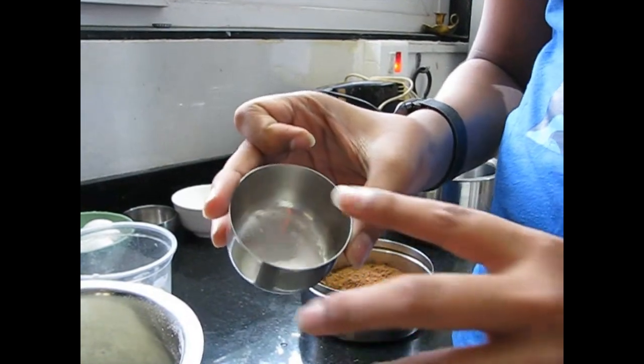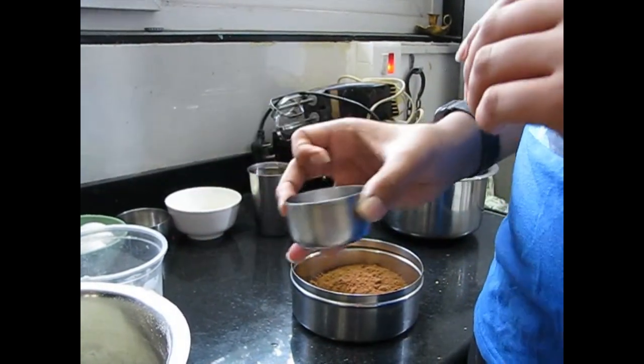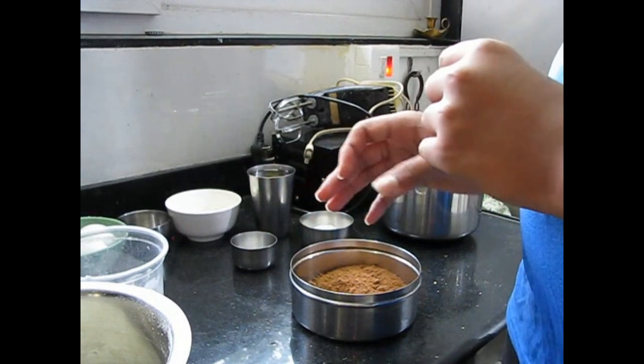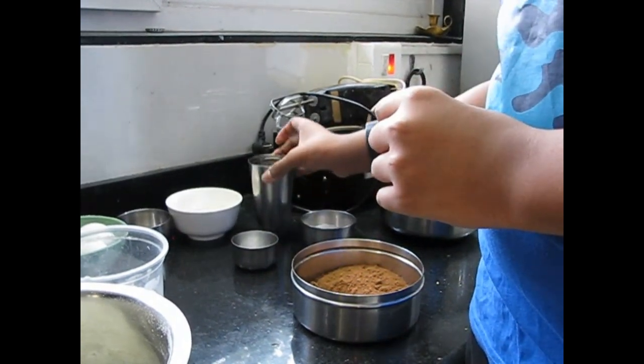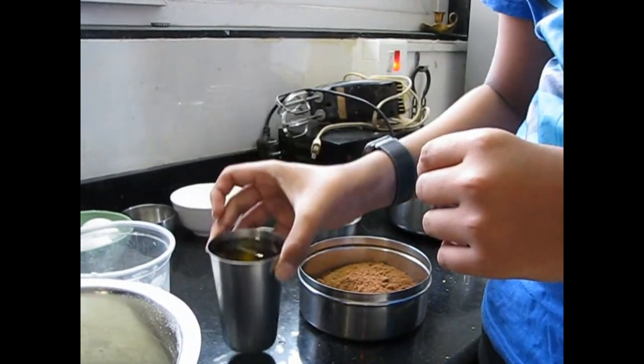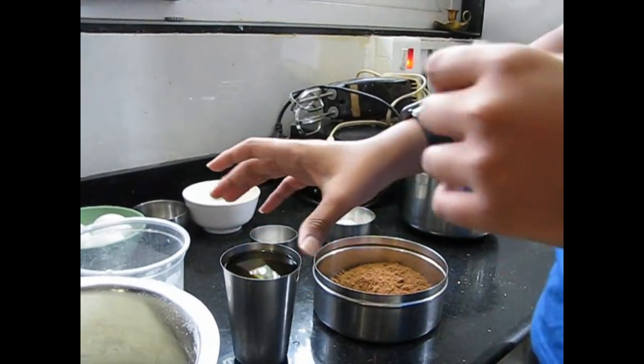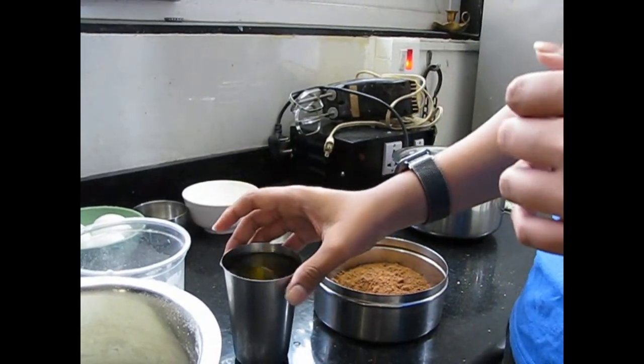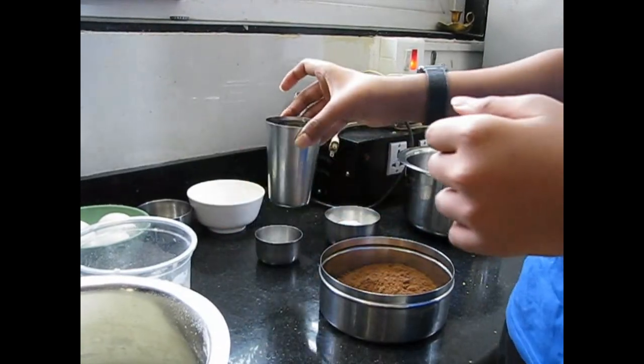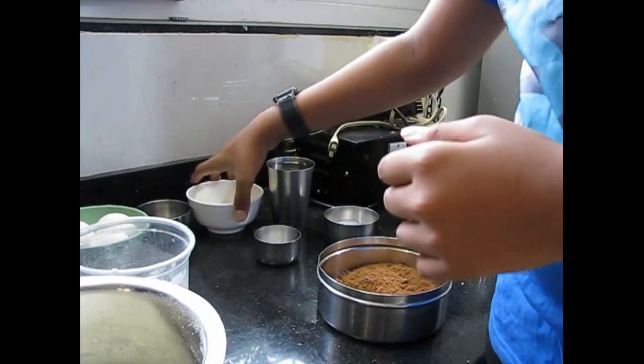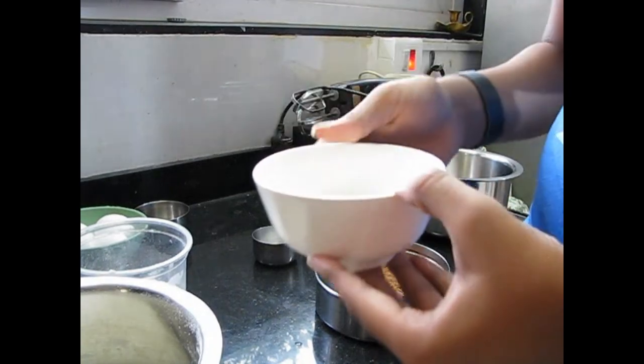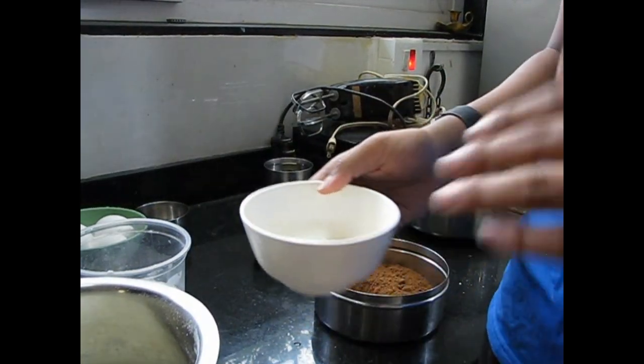Then here we have 250 ml of oil. You can use any oil, but I would suggest don't use mustard oil because you don't want your cake to smell of mustard. Then here we have some milk, about three-quarter cup milk.